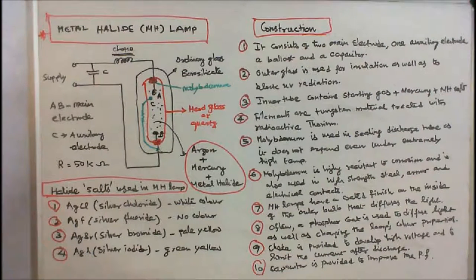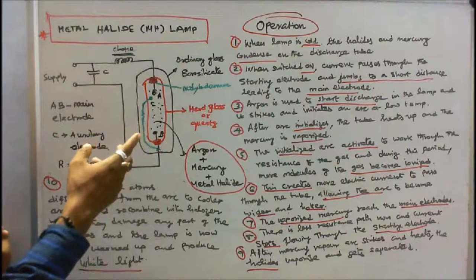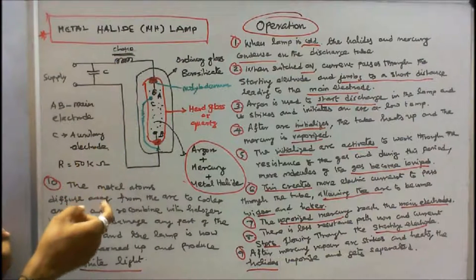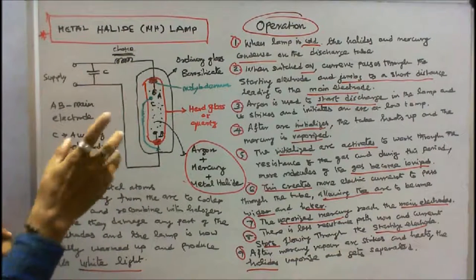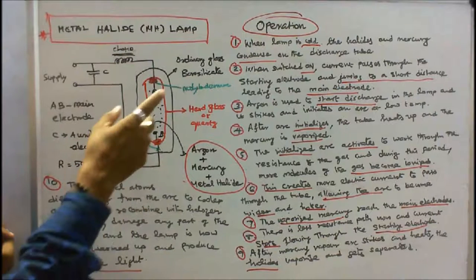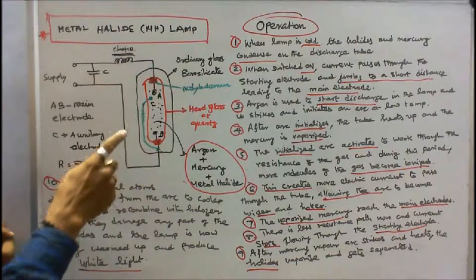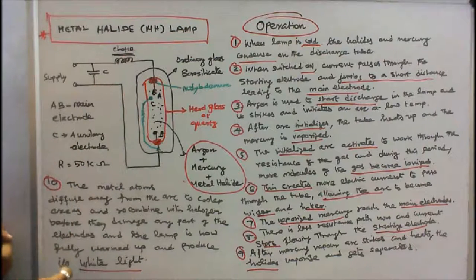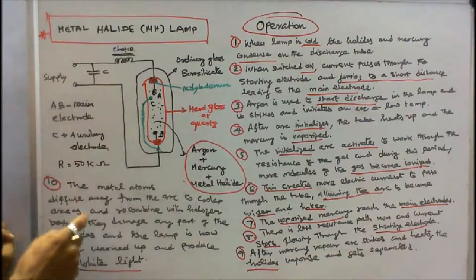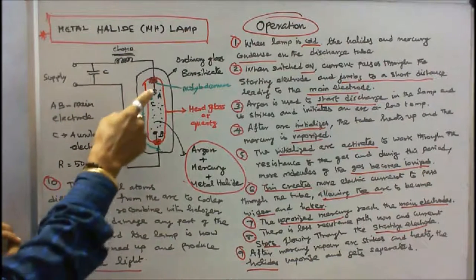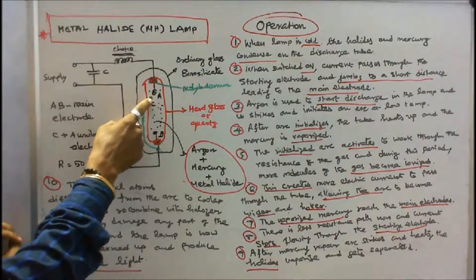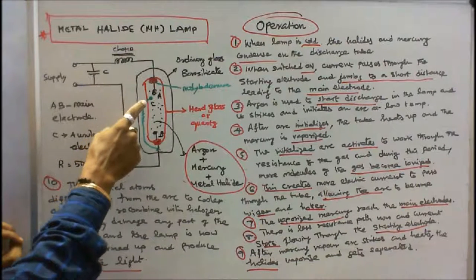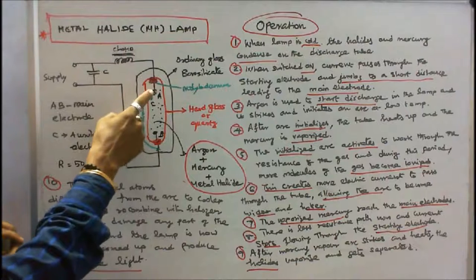Now we see the operation of metal halide lamp. When lamp is cold, the halides and mercury condense on the discharge tube or inner tube. When the supply is switched on, current passes through the starting electrode or auxiliary electrode and jumps a short distance leading to the main electrode.